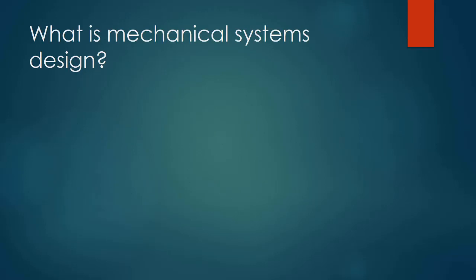So what is mechanical system design? What we are doing is building machines and mechanisms to address a societal need. In mechanical engineering, we're building physical things, not software tools. We use software to control these physical things, but we're talking about building physical structures.